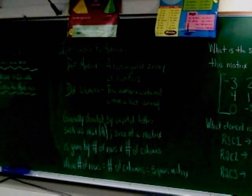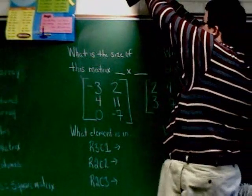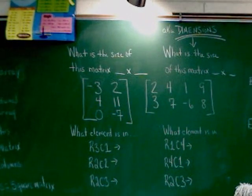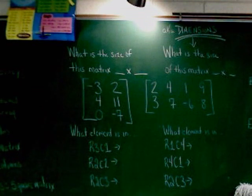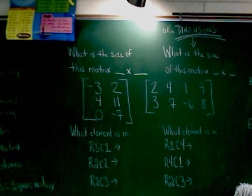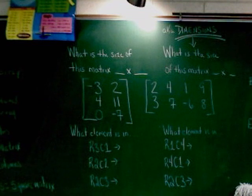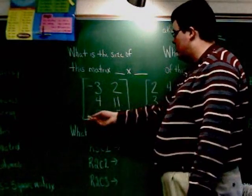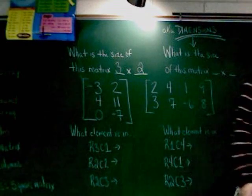As you can see in this next column here, I've got the first problem there, and I ask you what is the size of the matrix. And you can see the numbers there are negative 3, 2, 4, 11, and 0, negative 7. And then I ask you what element is in R3C1, R2C2, and R2C3. Okay. So let's start with the size of the matrix. The size of the matrix is simply the number of rows it has times the number of columns it has. So if you take a look, we've got 1, 2, 3 rows, and 1, 2 columns. So it's a 3 by 2 matrix.